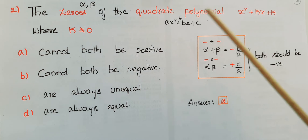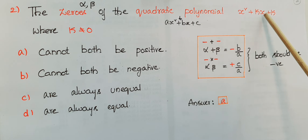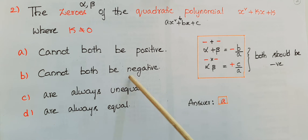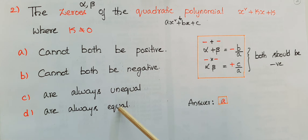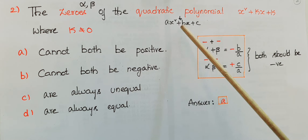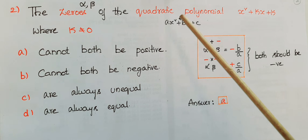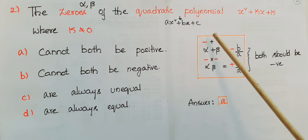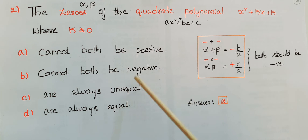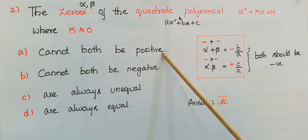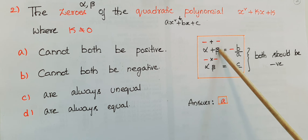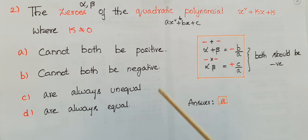The second question: the zeros of the quadratic polynomial x² + kx + k, where k is not equal to 0. The options are: cannot both be positive, cannot both be negative, always unequal, or always equal. We just learned that for x² + bx + c, both zeros should be negative — so they cannot both be positive. The option 'cannot both be negative' is wrong. The correct answer is A: cannot both be positive.